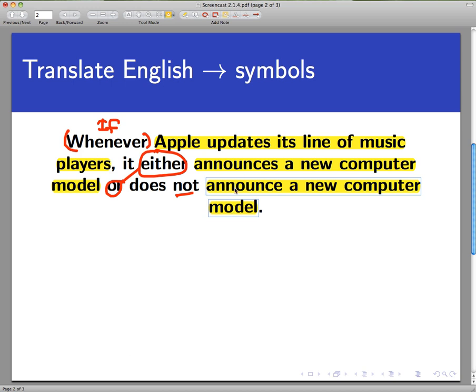Now what you notice is that this sentence is the same as the previous one. So although there are three pieces of text that I just highlighted, there are only two basic statements here. One that says Apple updates its line of music players, and I'll just call that P. And a second one that says Apple announces a new computer model. So that's Q.